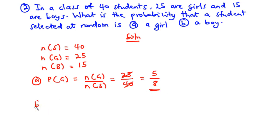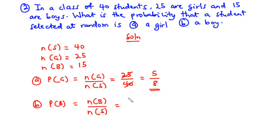Now let's solve for B. The probability that a student selected at random is a boy is equal to the number of boys in the class divided by the total number of students in the class. The number of boys is 15, so 15 divided by 40. 5 goes into 15 three times and into 40 eight times. So the probability that a student selected at random is a boy is 3 over 8.